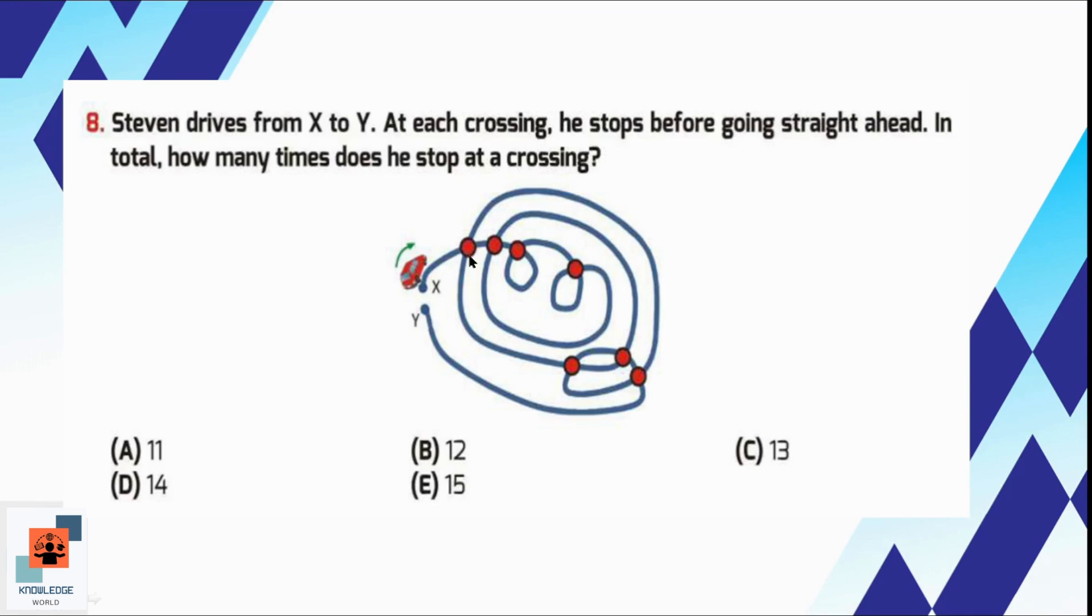When he drives from X, he will pass this crossing, so it's 1, then 2, here it is 3. After driving through the circle, he will pass from this crossing again, so it is 4, 5th. Again after covering this circle, he will pass from this crossing again, so it is 6. After that he will cover this area, then 7. From here he will go to this crossing, so it's 8, 9. After covering this upper line, he will pass from this crossing again, so it is 10. From here he will go to the next crossing, it's 11, and from this place he will go straight to Y. So 11 is the correct answer. He will stop at 11 crossings.